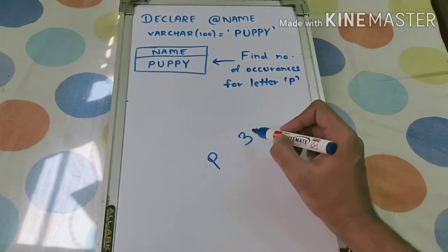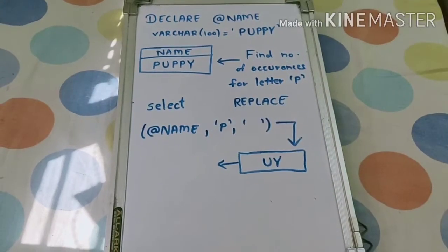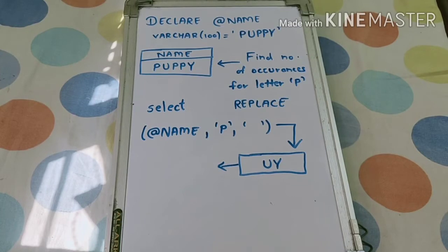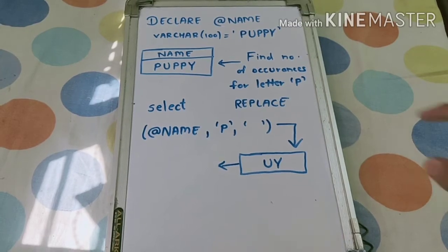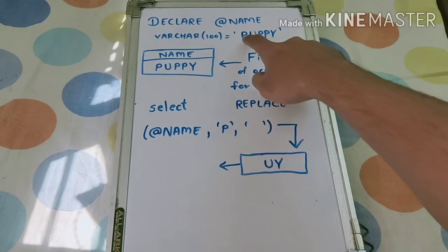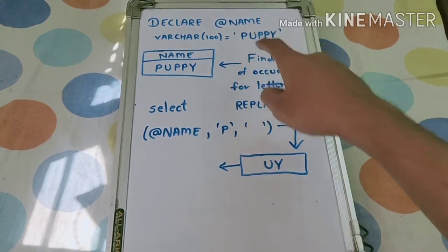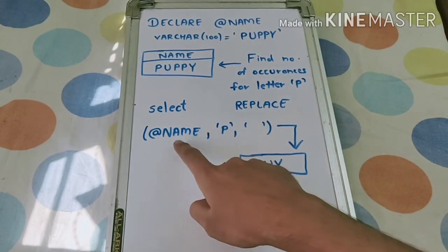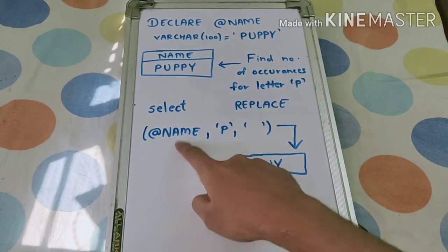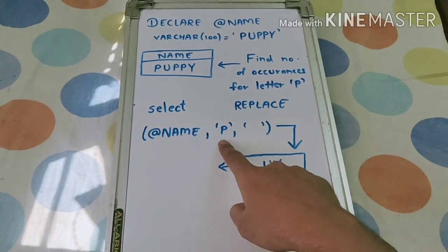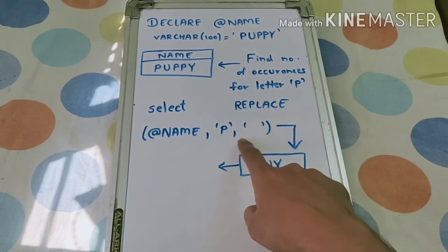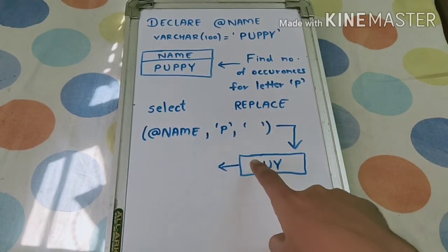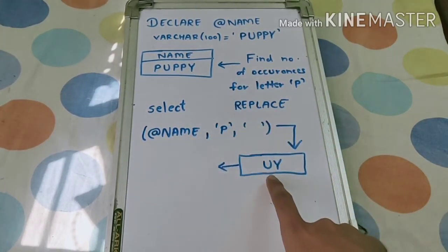The first thing you have to do is replace the letter with an empty string. So here we replace P — the letter for which we want to find occurrences — with an empty string. Write: SELECT REPLACE(name, 'p', '') — giving three arguments: the column name, the letter to replace, and the empty string. This will replace all P's, giving us only 'uy' as output.